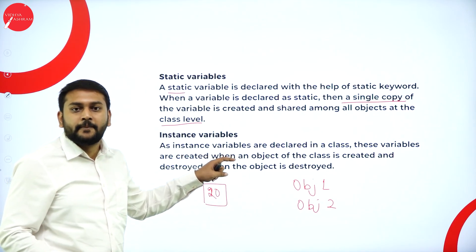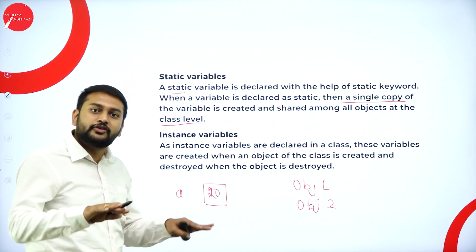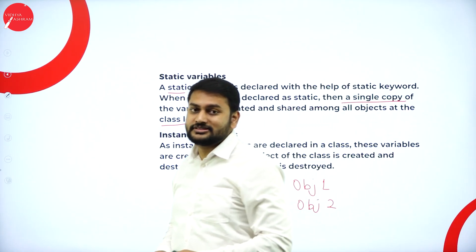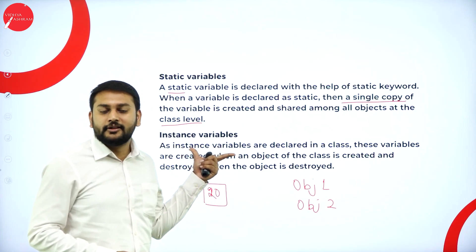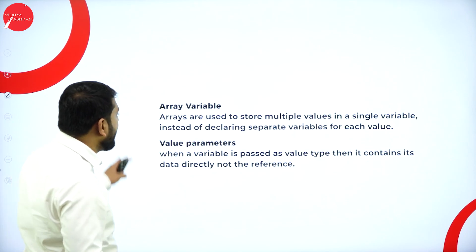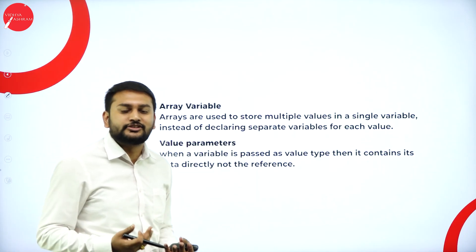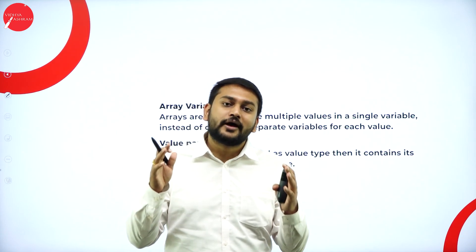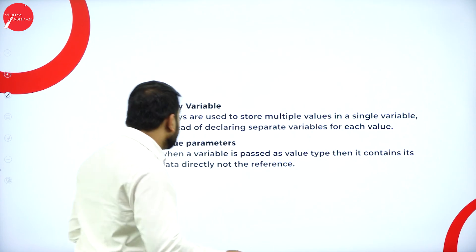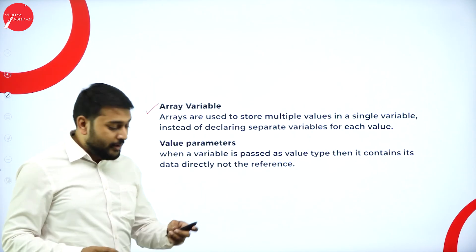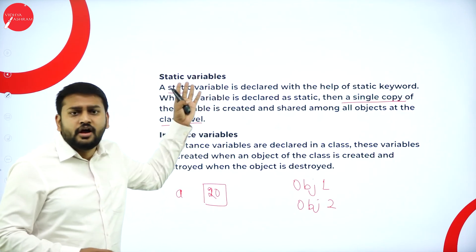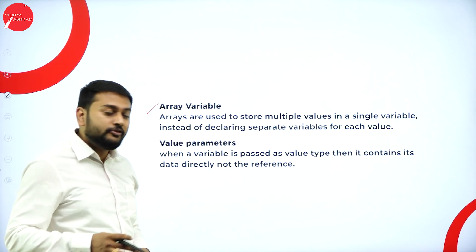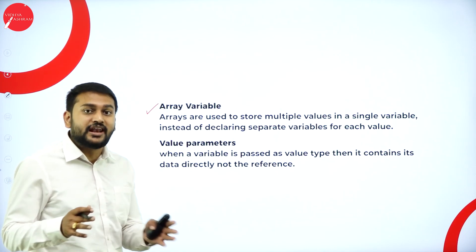Moving on to instance variable — these variables are created whenever you create the objects, as soon as you create the objects. Moving forward to array variable — we all know the concept of arrays. We use arrays to store multiple values of the same type. If I want to store multiple values of the same type in one variable, I will use array variables. With instance or static variables, I cannot store multiple values — but with array variable, I can store multiple values.